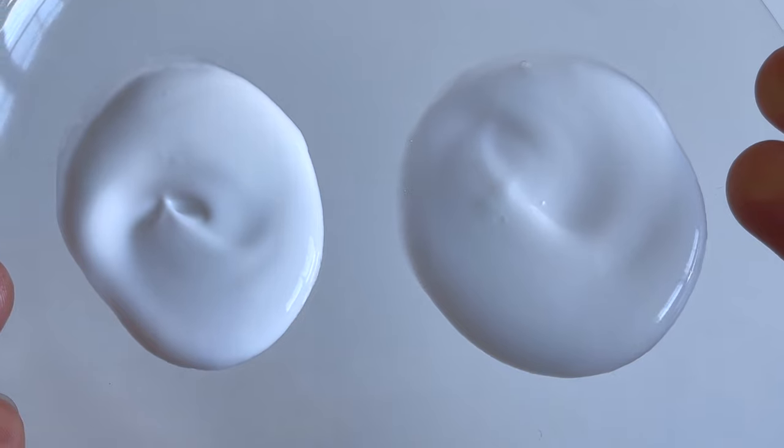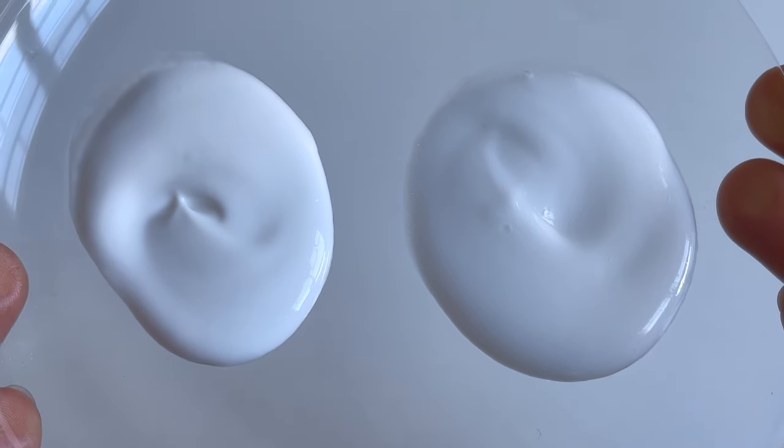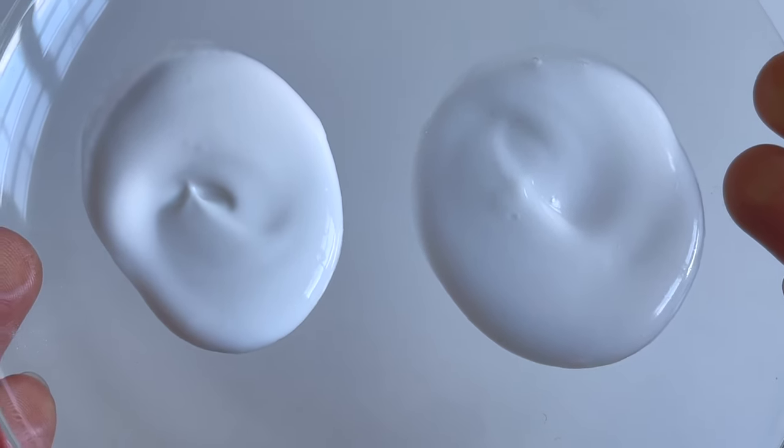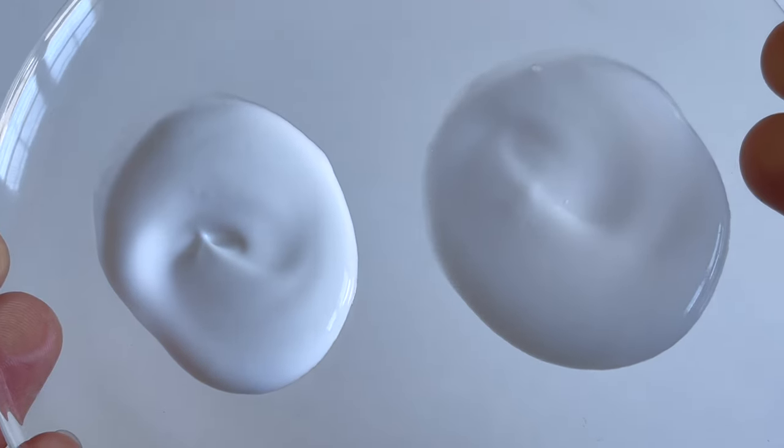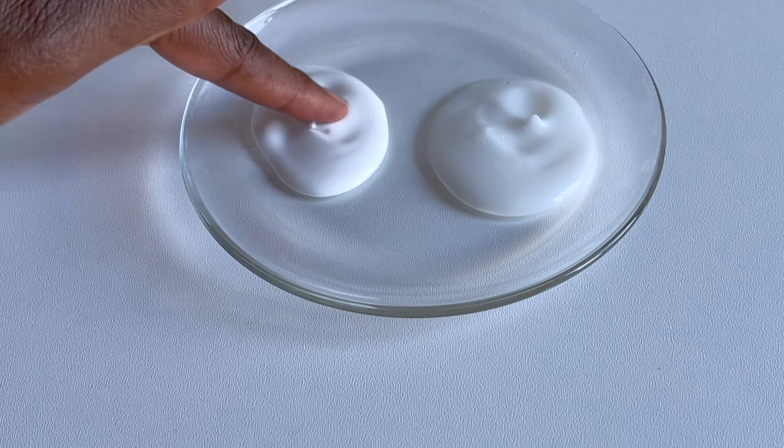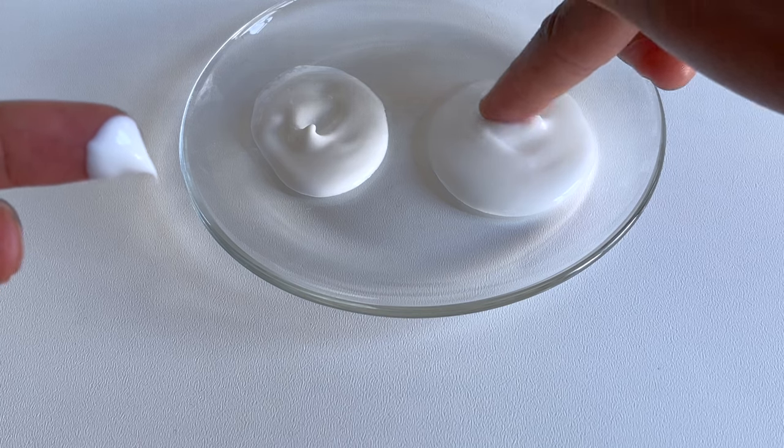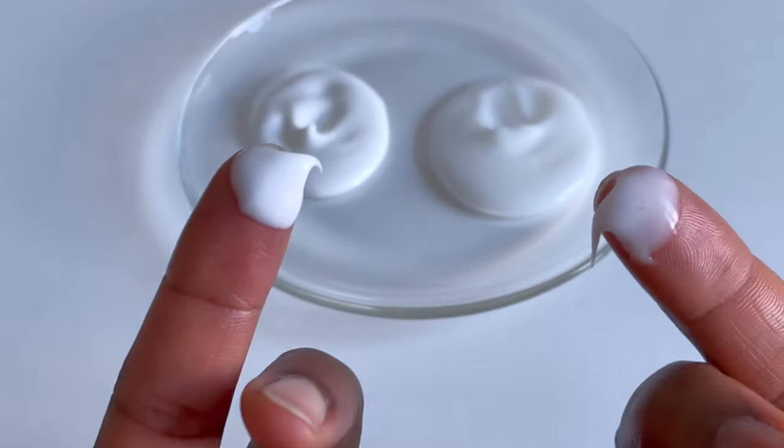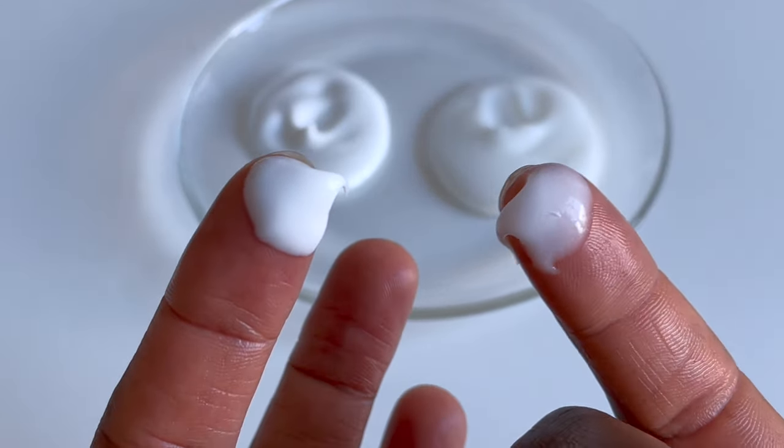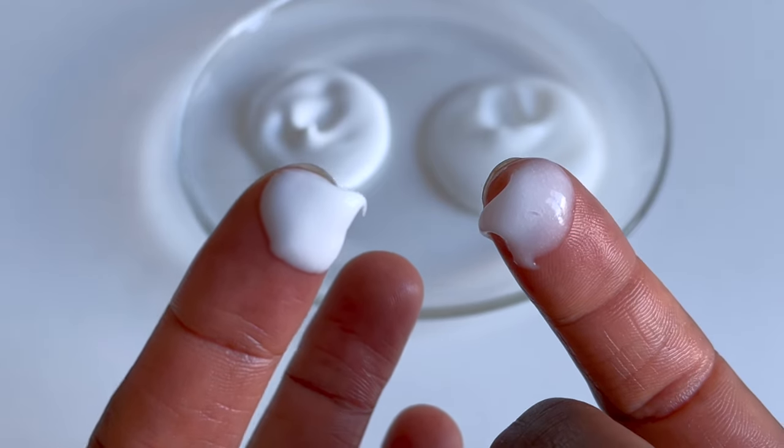Here is a very good example. Here on my right is the exact formula as on my left. However, I was not able to achieve the same creamy texture as I did with the one on the left where I used a stick blender. You can clearly see the difference in the texture and consistency.